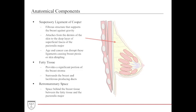Deeper in the breast there are additional structures such as the suspensory ligament of Cooper. This ligament helps keep the breast vertical and lifted against gravity. It extends from the dermis to the deep layer of the superficial fascia of the pectoralis major. With age or cancer, these ligaments may become disrupted, causing the breast to sag — called ptosis — or causing skin dimpling, especially in malignant situations.